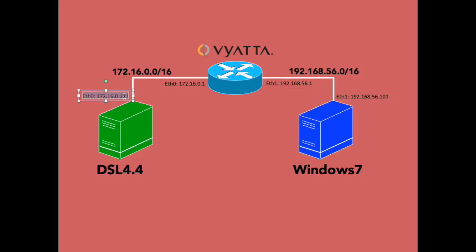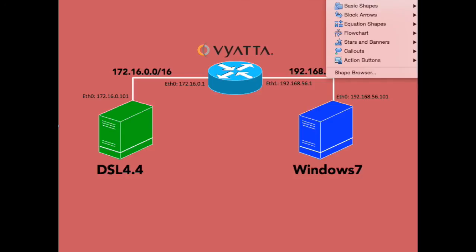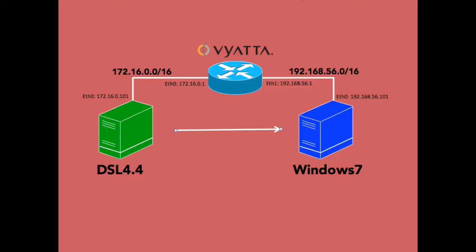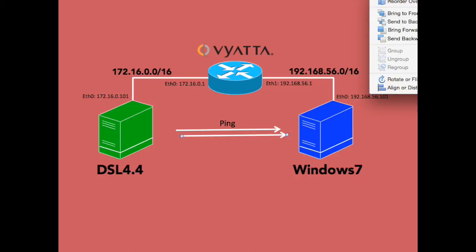We're then going to instance a Damn Small Linux machine version 4.4 and configure an Ethernet interface — either via DHCP or by hand — to be on the 172.16 network. We're going to ping between these two interfaces to show that it's up and running. Then we're going to configure a Windows 7 machine with an interface on the 192.168 network, pinging its 192 partner on the VyOS. Finally, we're going to configure routing on the VyOS so that we can actually get a ping working between the two machines.